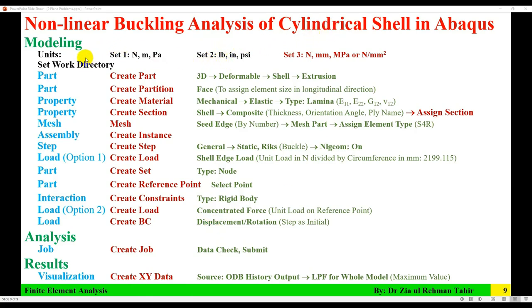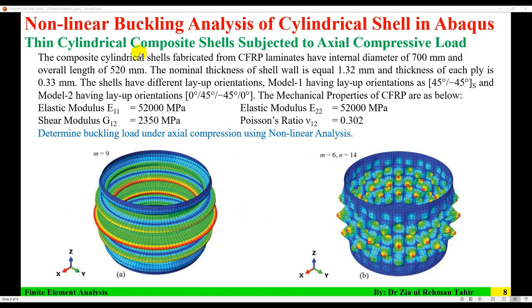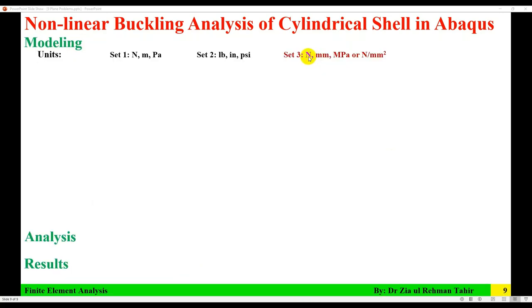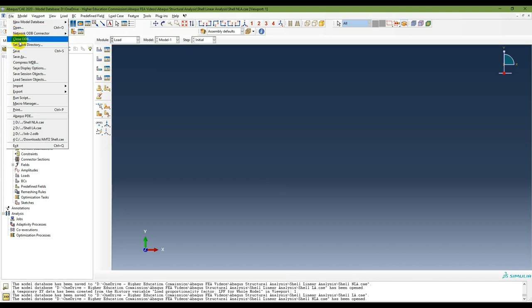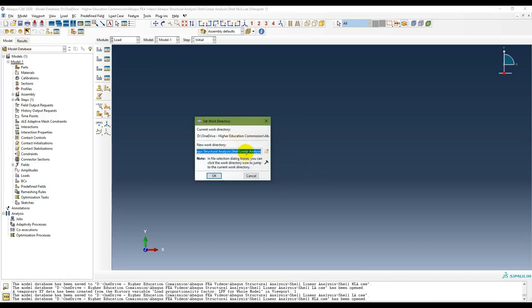First, you need to check which units you are going to use. In this model, length, diameter, and thickness are in millimeters, and modulus is in megapascals. So I am going to use Newton, millimeter, and megapascal as the unit set. First of all, you need to set the work directory: File > Set Work Directory.